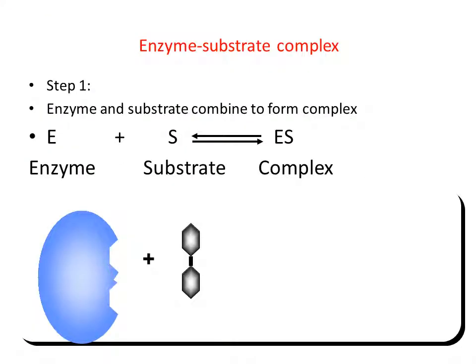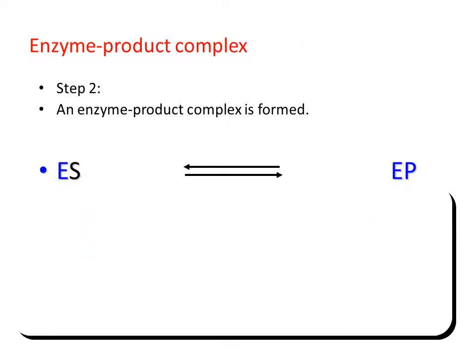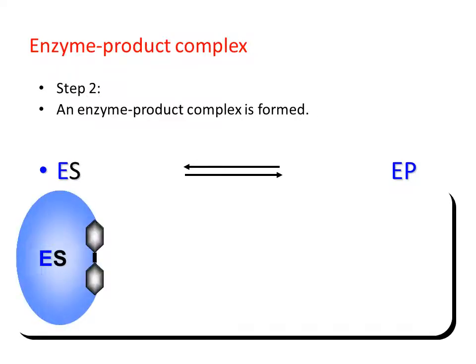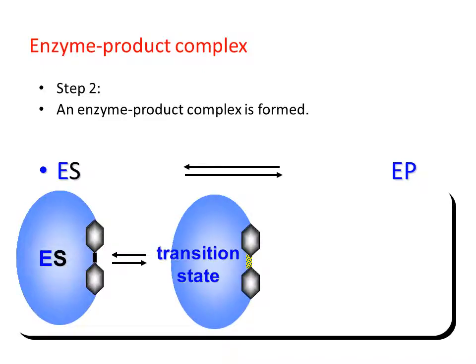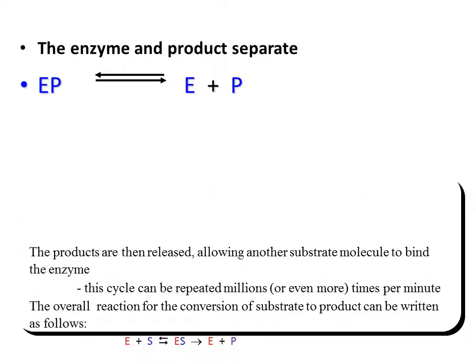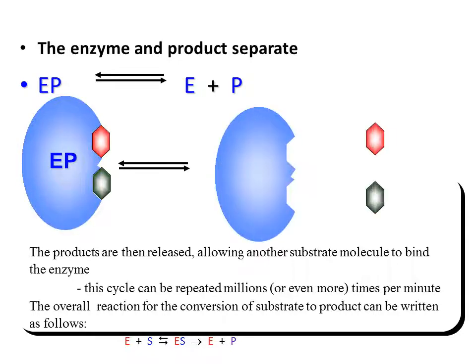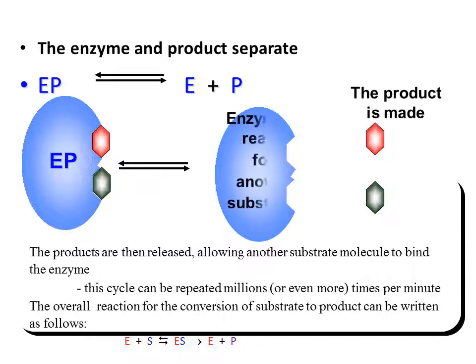We can also express the enzyme-catalyzed reaction in brief notation: E + S → ES → E + P. In diagram form: the enzyme (E) plus substrate (S) forms the ES complex; in the second step, the ES complex reacts and breaks down into E plus product (P). Finally, the enzyme and product separate — they are released together and then the product detaches from the enzyme.